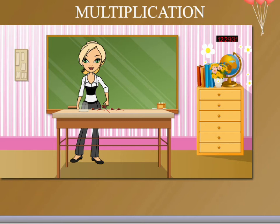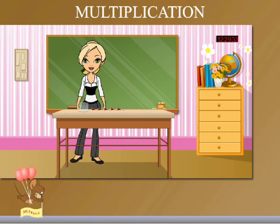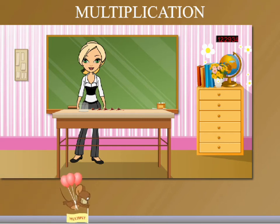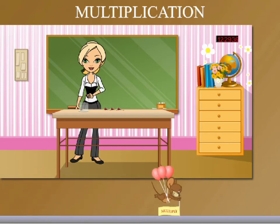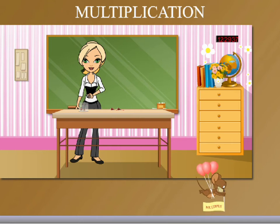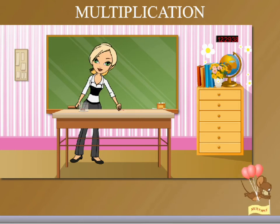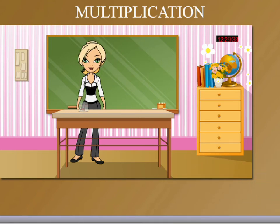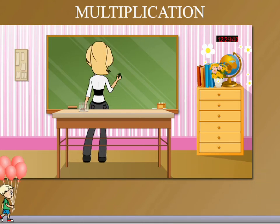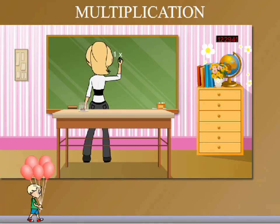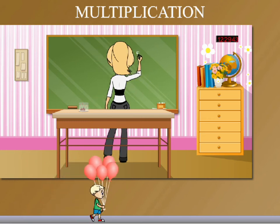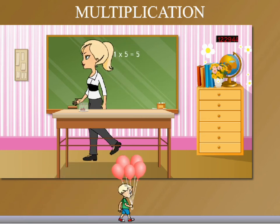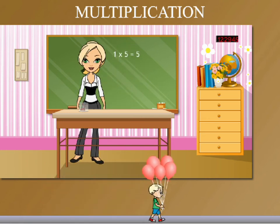She counts the new lollipops as 1, 2, 3, 4, and 5. Again, she puts these in the container one by one, making one group of 5 lollipops. She then writes on the board '1 into 5 equal to 5'.